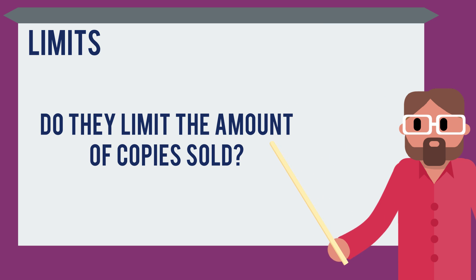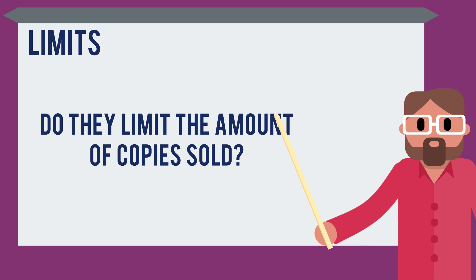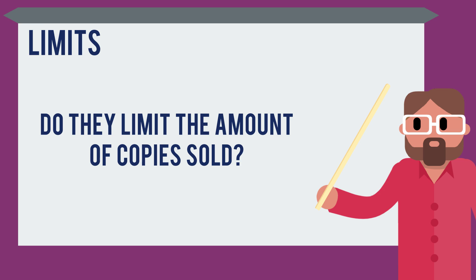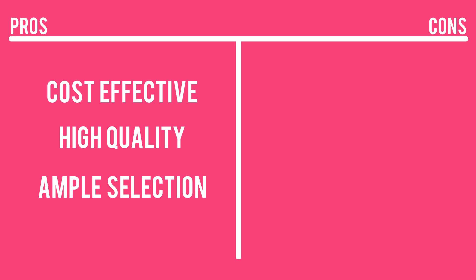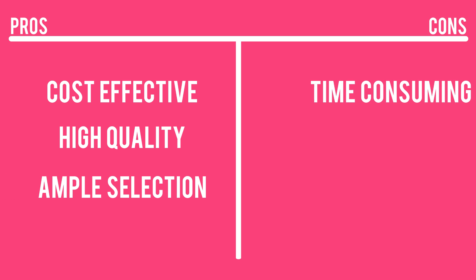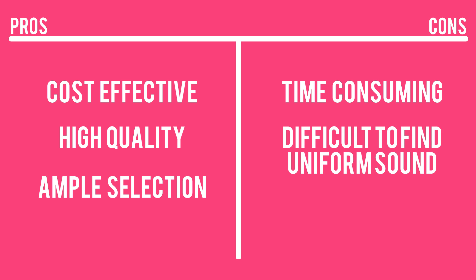Limits: do they limit the amount of games you can sell? Some licenses only allow for a certain number of copies to be sold before you have to purchase a different license. In terms of pros and cons, some pros of licensing music or sound effects are: it's more cost effective than hiring a composer for custom asset creation, the tracks are high quality and typically sound great, and there is ample selection. Some cons are that it can be time consuming to find the perfect tracks and sounds, it may be difficult to achieve a uniform sound unless you source everything from the same team, and selecting the correct license can get tricky.